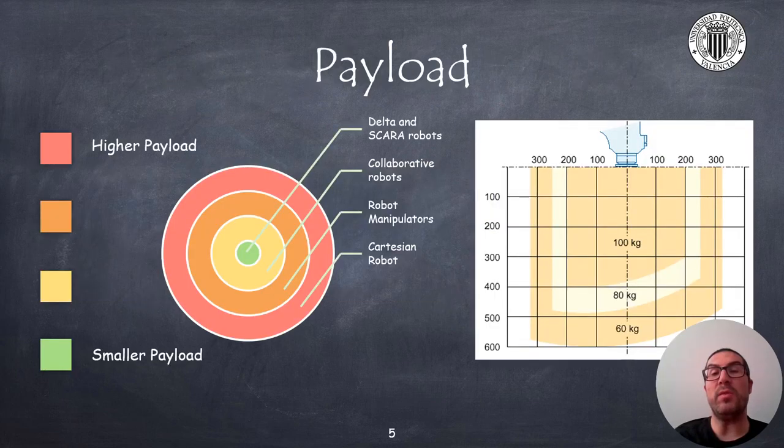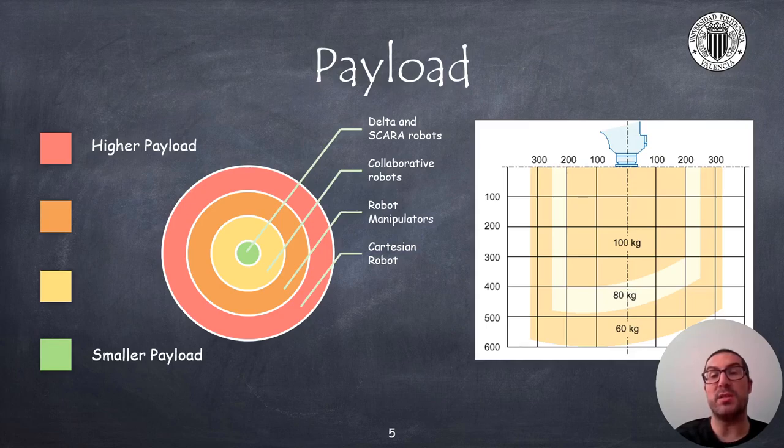The payload of a robot defines the maximum capacity to carry a load. The actual maximum weight of a load will depend mainly on the distance to the robot flange, since the important thing in the end is the maximum torque that the robot is capable to generate.